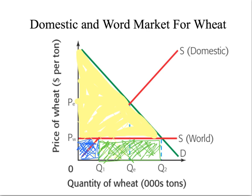So the United States government might want to intervene in the marketplace and might establish a tariff on imported wheat. That tariff will result in an increase in the price of wheat from PW to PT. Look what it does — it brings this quantity of U.S. producers back into the marketplace.